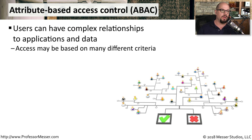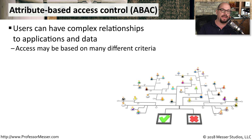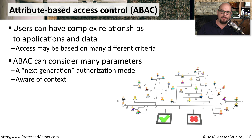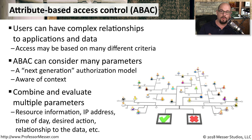Attribute-Based Access Control, or ABAC, allows us to create very complex relationships between the applications we're using and the data that is used by those applications. You can use many different types of criteria to determine exactly what type of access a person might have. ABAC is often referred to as the next generation of authorization because of all the complex context associated with this authorization model. For example, ABAC authorization may consider your IP address, the time of day, your geographical location, and many other criteria to determine exactly what type of access you have.